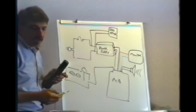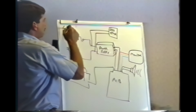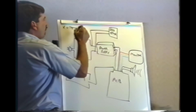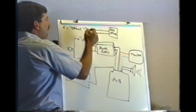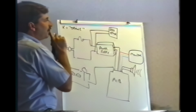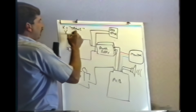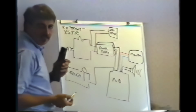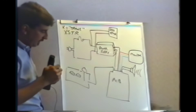We use the letter X as the prefix for 'trans.' For instance, transformer is XFMR, transistor is XSTR.